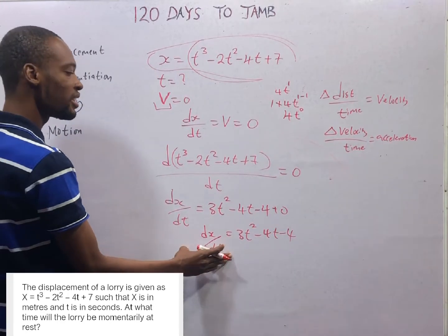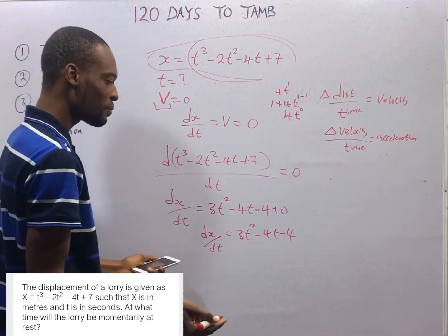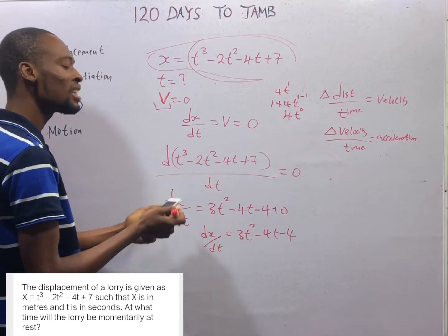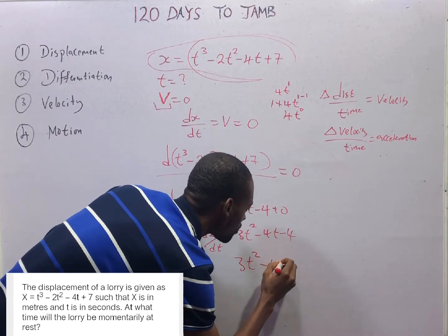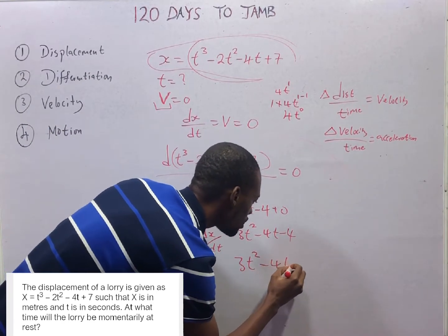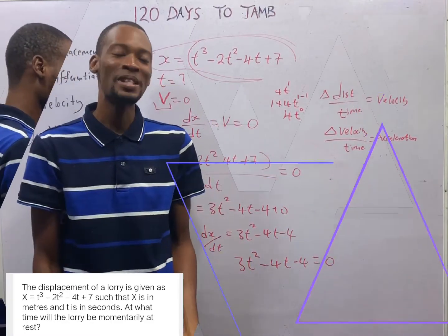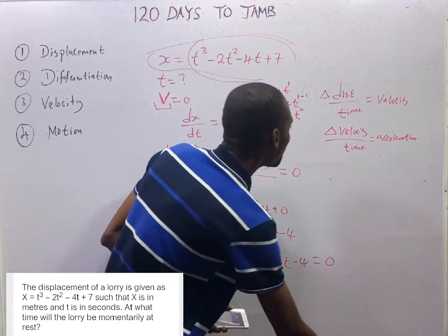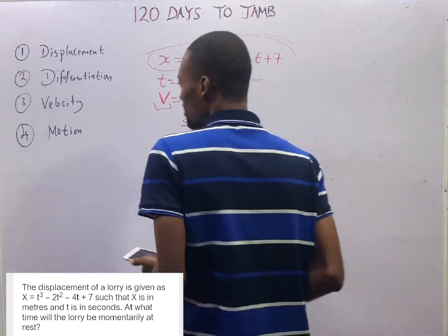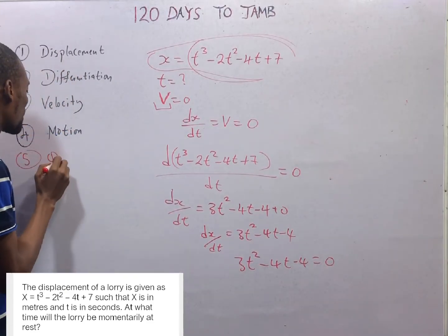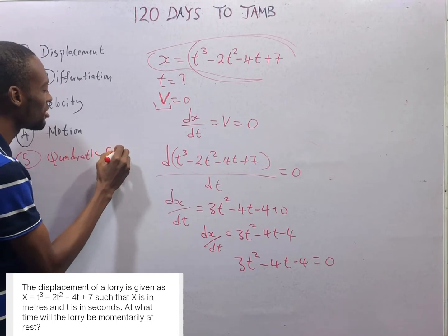This is the velocity. The body will be at rest when velocity is zero, so the lorry will be momentarily at rest when 3t² − 4t − 4 = 0. This brings in another topic — it introduces us to quadratic equations.